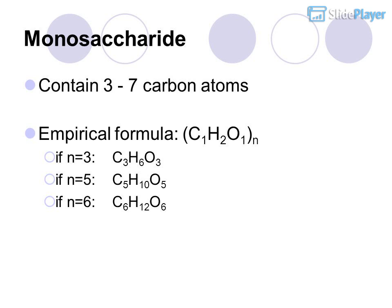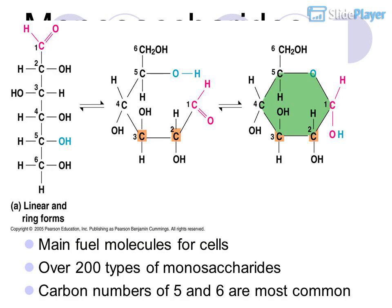If N equals 3, the formula is C3H6O3. If N equals 5, the formula is C5H10O5. If N equals 6, the formula is C6H12O6. Examples include glucose (C6H12O6), fructose (C6H12O6), ribose (C5H10O5), and glyceraldehyde (C3H6O3). Monosaccharides contain hydroxyl and carbonyl groups, can switch between linear and ring forms, and are the main fuel molecules for cells.